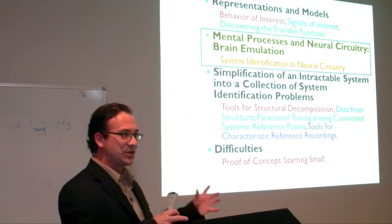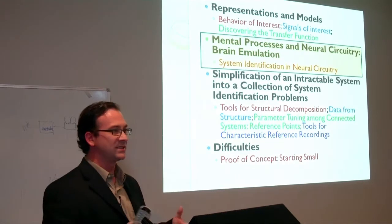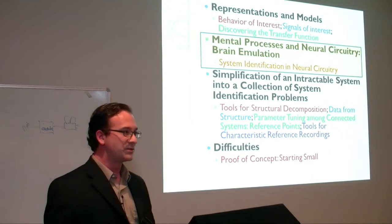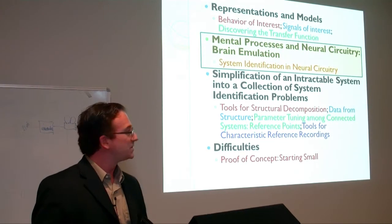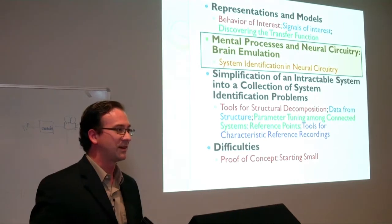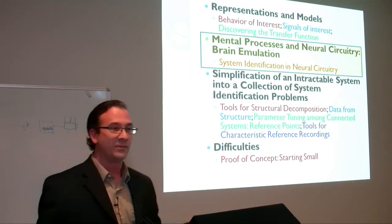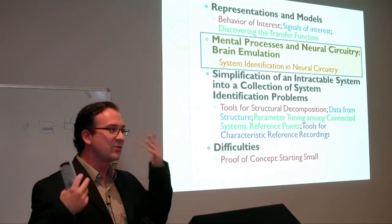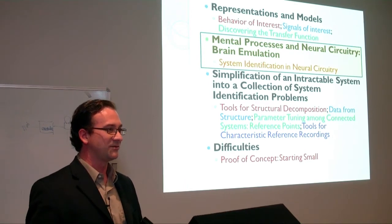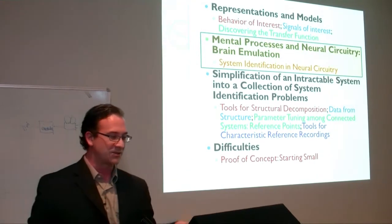Now, taking all this general material about making models and system identification, how do you apply it to mental processes and neural circuitry? The term 'mental processes' is not the same as 'neural circuit function.' Many neuroscientists are interested in the functions of what's going on inside our minds — a very abstract term. It's not just about neurons and synapses; we want to find the connection between what's going on in our minds and what's happening in those neural systems.